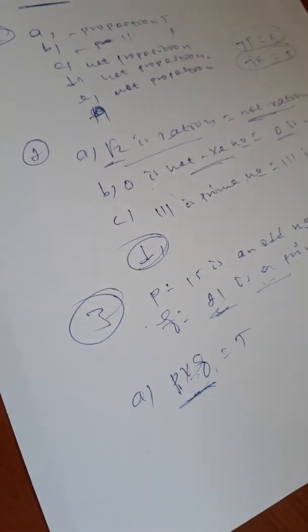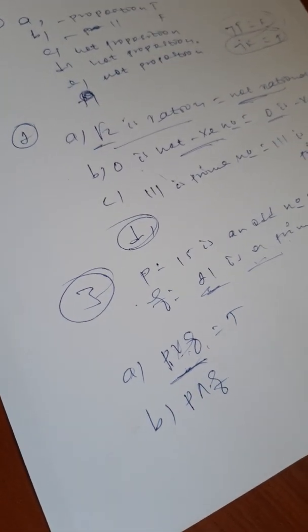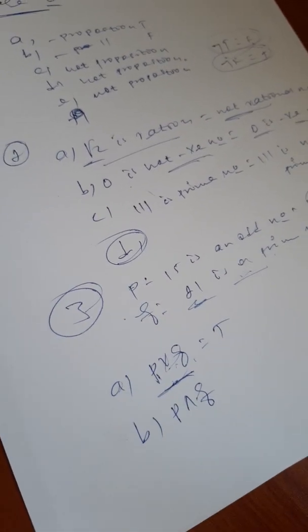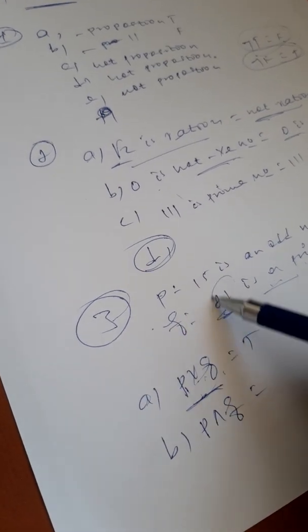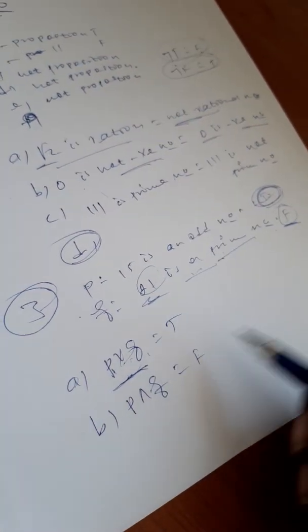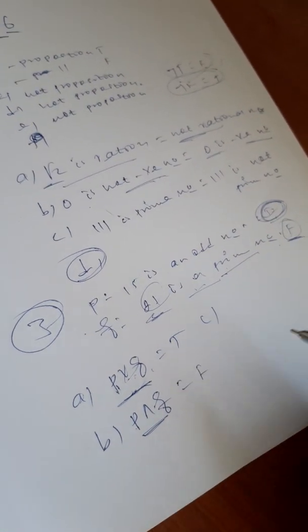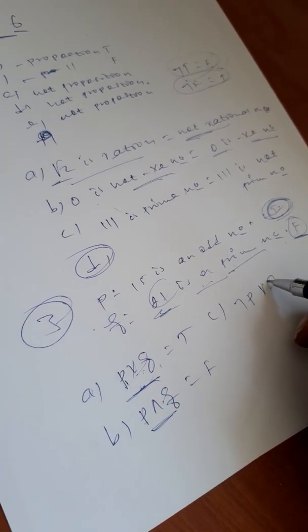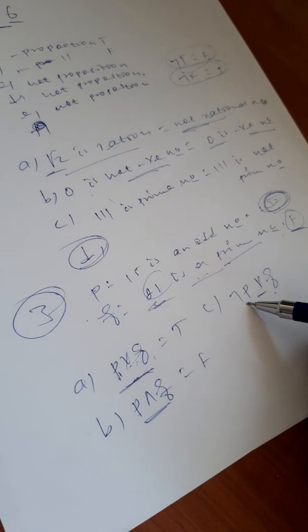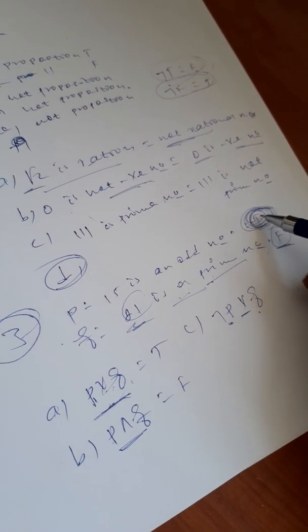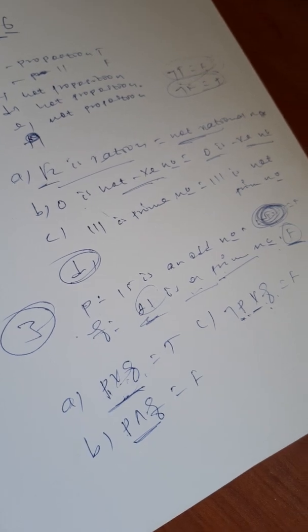For p and q: true and false equals false, because both must be true for a conjunction to be true. For the negation of (p or q): since p or q is true, the negation is false. Also, not p is false and not q is false, so false or false equals false.